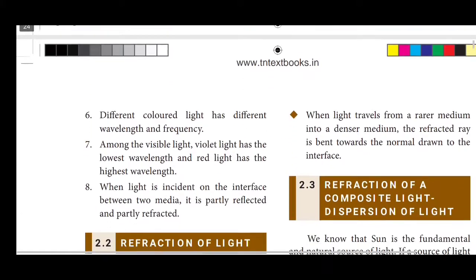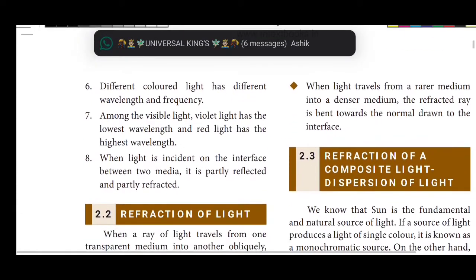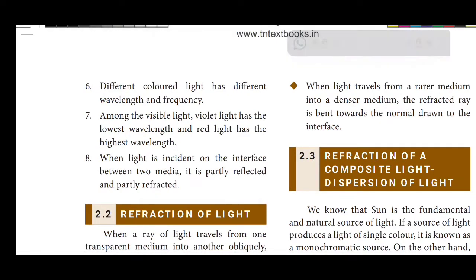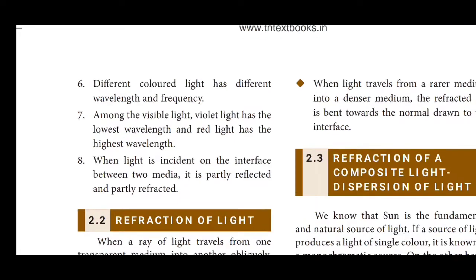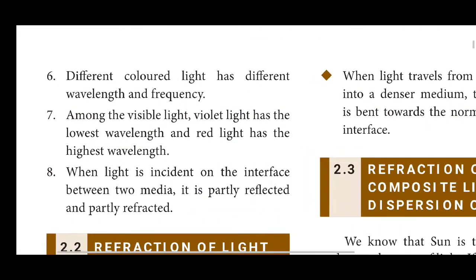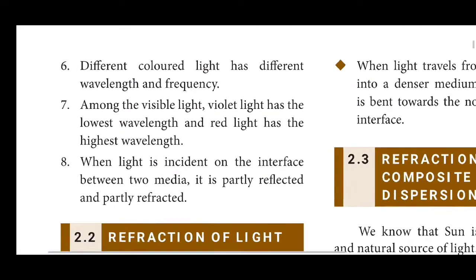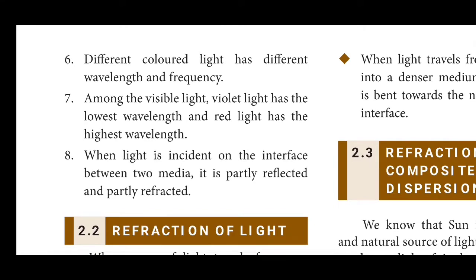Different colors of light have different wavelengths and frequencies. Among visible light, the wavelength varies across colors. Violet light has the lowest wavelength and highest frequency, while red light has the highest wavelength and lowest frequency.